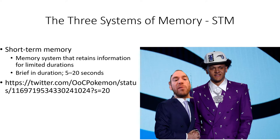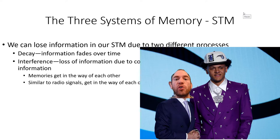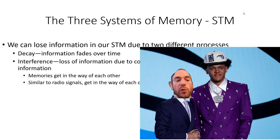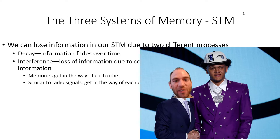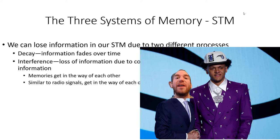Short-term memory retains information for limited durations — about five to twenty seconds. We can lose information in short-term memory due to two processes: decay (information fades over time) and interference (loss of information due to competition with new incoming information). For example, someone gives you their name and telephone number, and a minute later you've forgotten both because short-term memory has a limited shelf life and the information hasn't reached long-term memory.